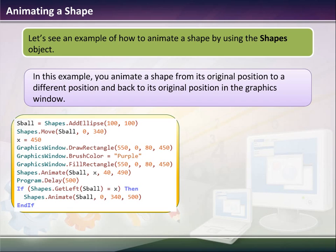Now, we can animate a shape by using the shapes object. In this example, we'll animate the shape from its original position to a different position and back to its original position in the graphics window.